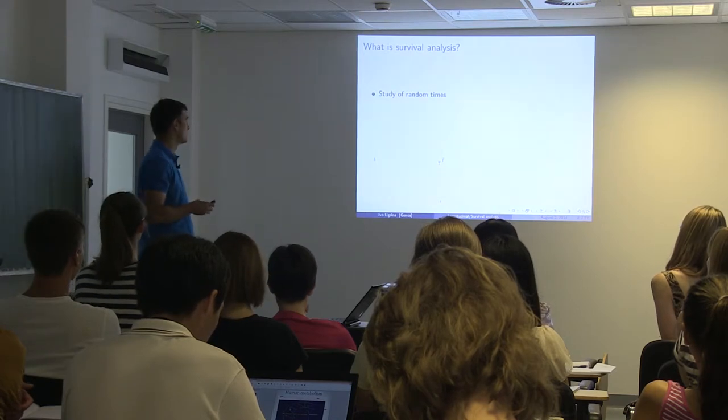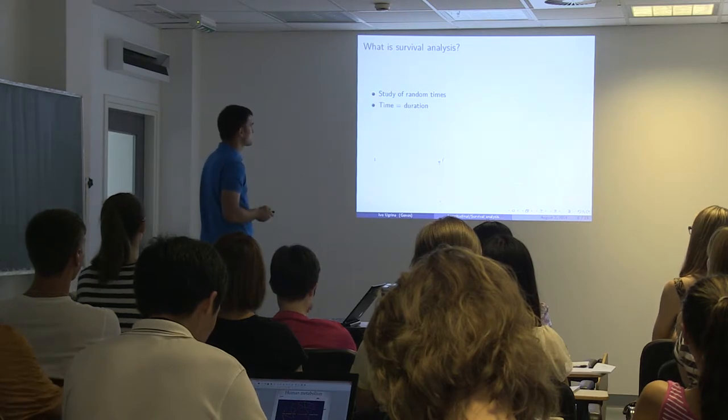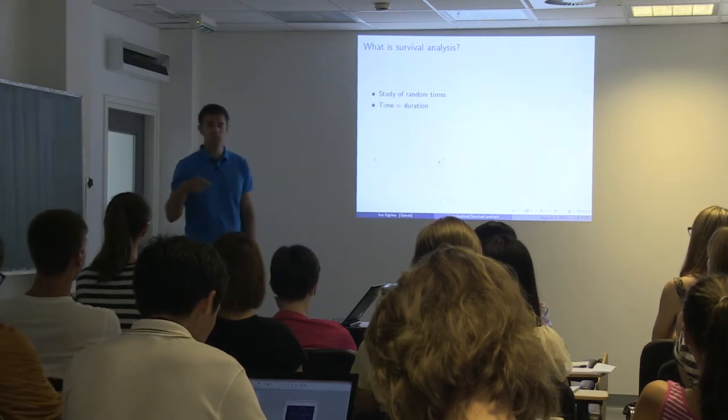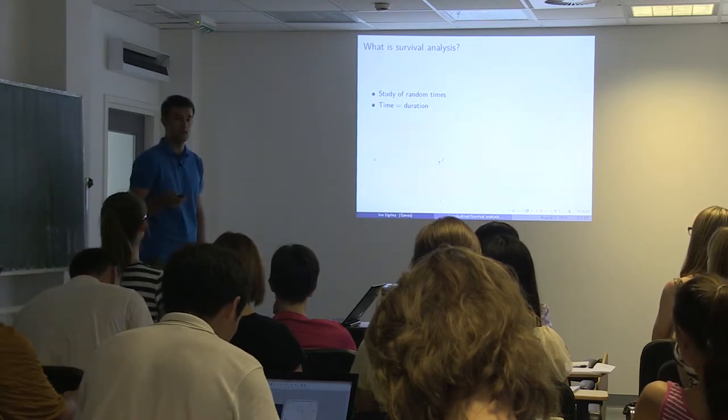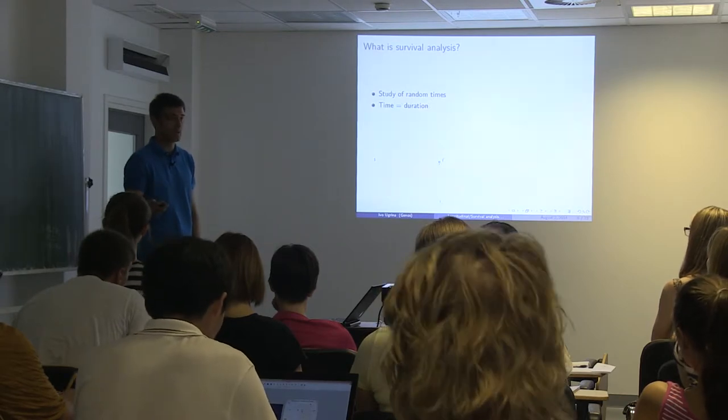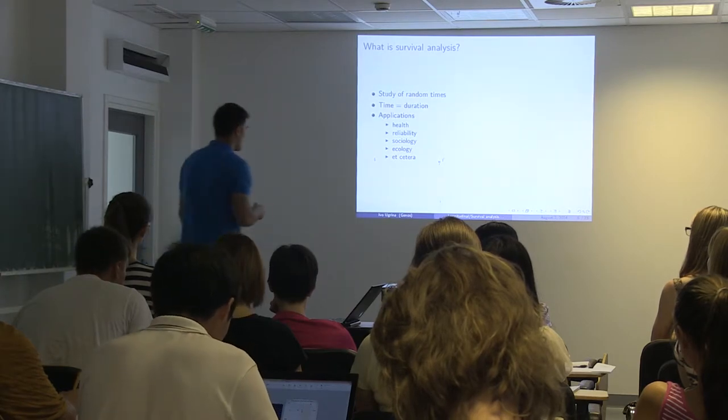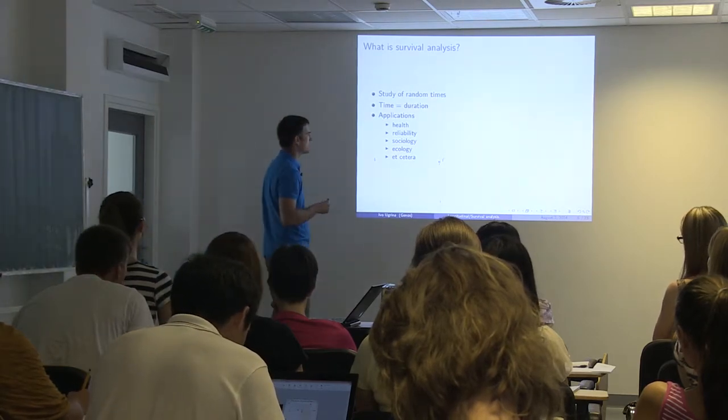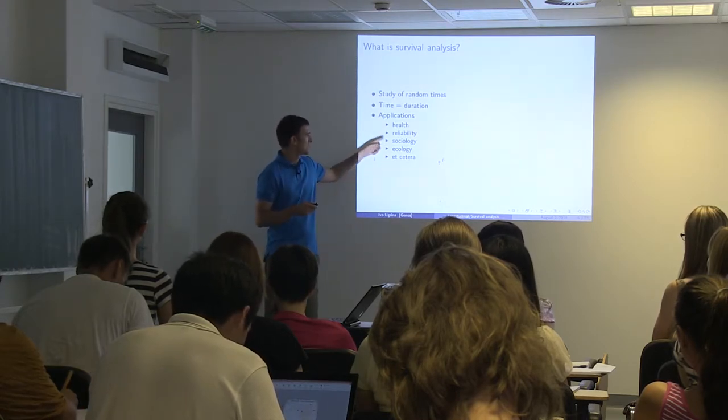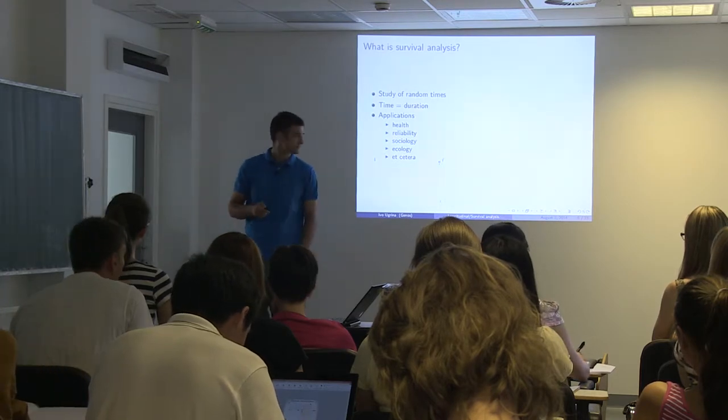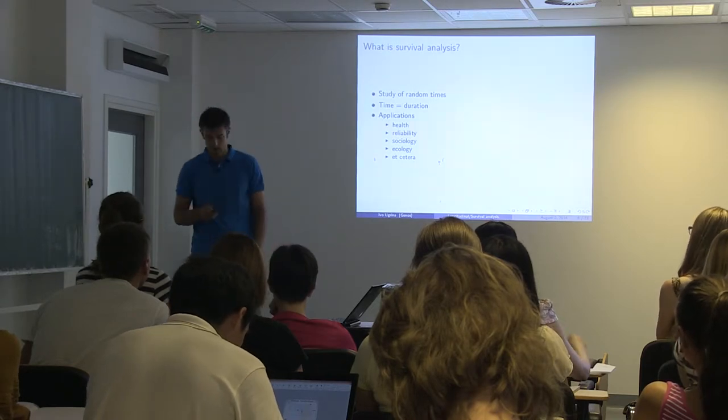With survival data, the real question is, what is survival analysis? So it's basically a study of random times in which you say time equals duration of some event or waiting for some event to happen, like a guy's going to die or something like that. And applications come from health, reliability. The two guys that made one really popular curve, it's called Kaplan-Meier's estimator curve. One comes from basically health and the other comes from reliability. You can do it in sociology, ecology and other fields.